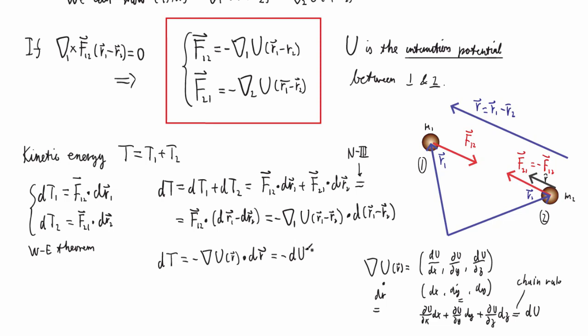Okay, so this is just the expression of the chain rule for differentials. So we have dT is minus dU, which is the same as to say that d of T plus U equals zero. In other words, T1 plus T2 plus total potential is conserved.